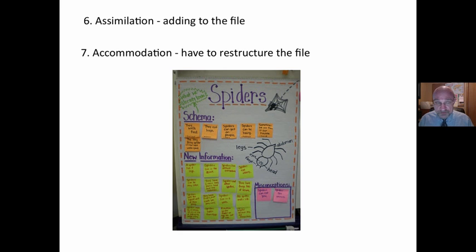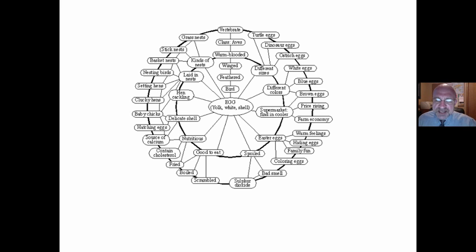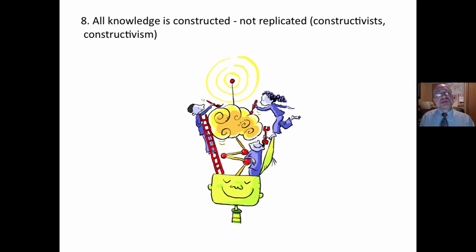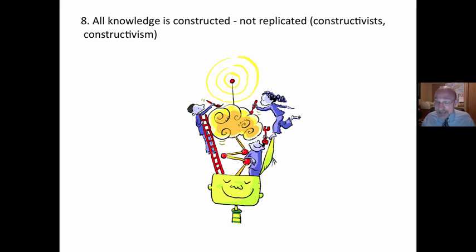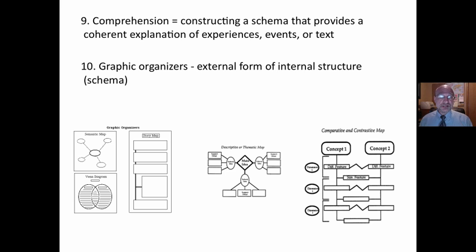Accommodation occurs when you get new information and it doesn't match the file folder in your head, so you have to restructure the file folder. Or when you have a schema that does not accommodate this new information — information that is totally new to you — you have to accommodate. Here is an illustration of what a schema might look like related to eggs. You see all the related information there. All knowledge that we have is constructed — it's not replicated. We use the file folders based on our past knowledge and experiences; that mixes with new information and we construct. So every person experiences an event, a text, a situation, and they all construct it just a little bit differently based on their own experiences and knowledge.